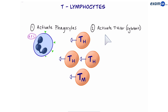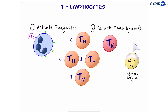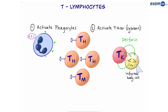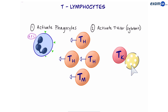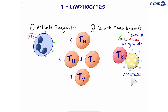The second role of T helper cells is to activate T killer cells, also known as T cytotoxic cells. They will go and find infected body cells, bind to them, and release proteins called perforins. These proteins create holes on the surface of the infected cell and all of the contents come out. This is called apoptosis. This is especially useful if there was a virus hiding inside the infected cell.